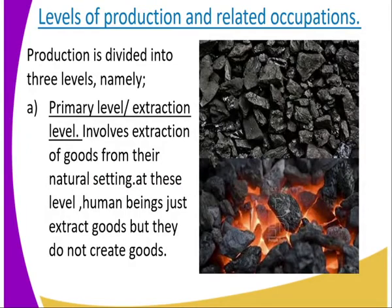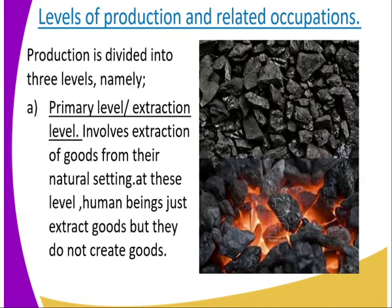Levels of production and their related occupations. Production is divided into three levels: primary, secondary, and tertiary. We are going to look at each level one at a time.